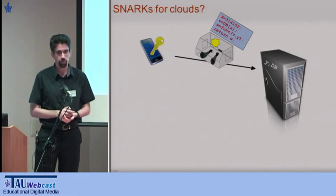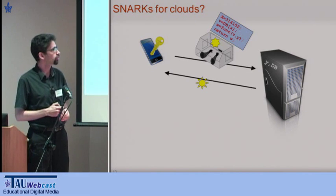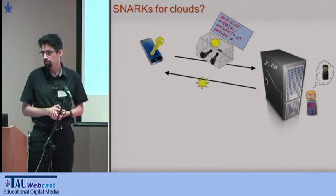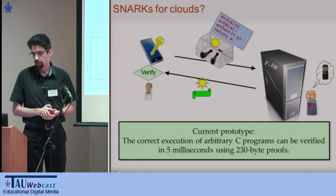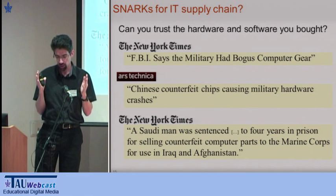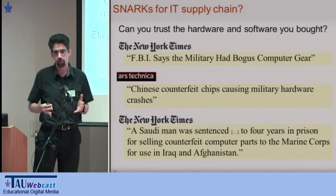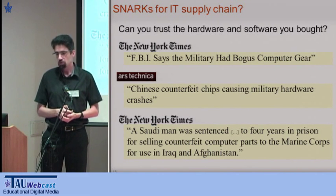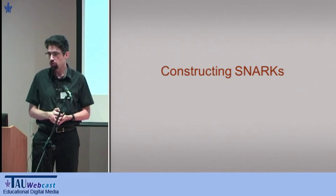ZK-SNARKs are useful for many other purposes. You can use them to prove integrity of computation on the cloud — send a computation to a virtual machine, have it come back with a result, and check computation that may have taken hours in just a short proof. You can also use SNARKs for checking the integrity of hardware that you bought but don't trust — the so-called information technology supply chain issue, which is a very big deal when even military hardware in the field often contains counterfeit components.